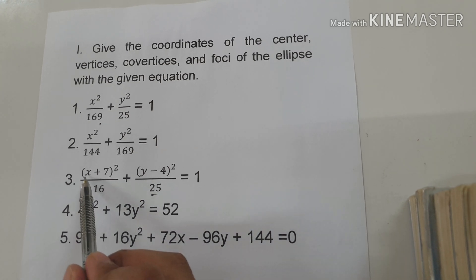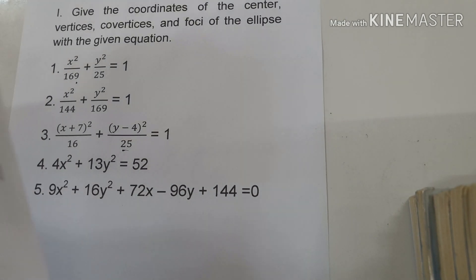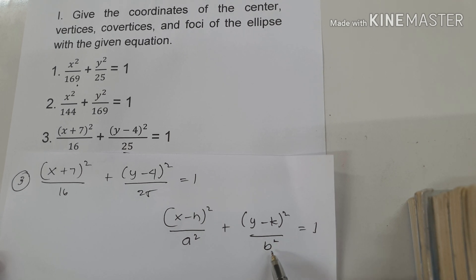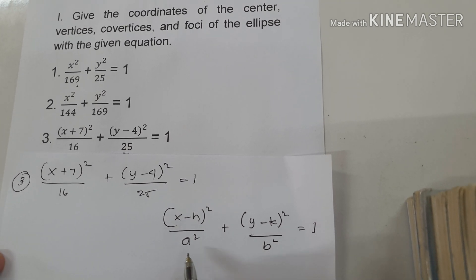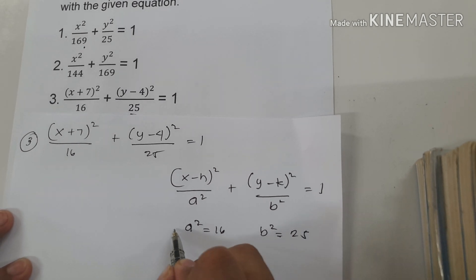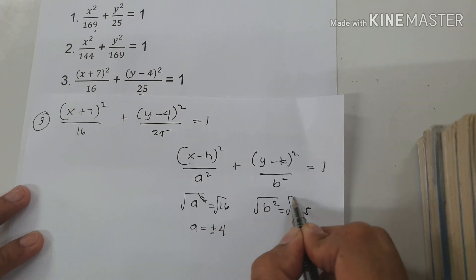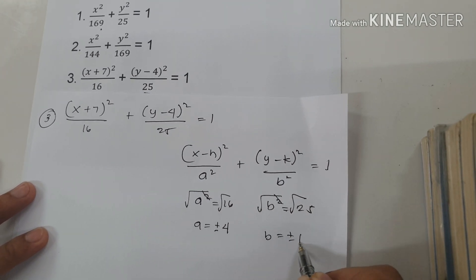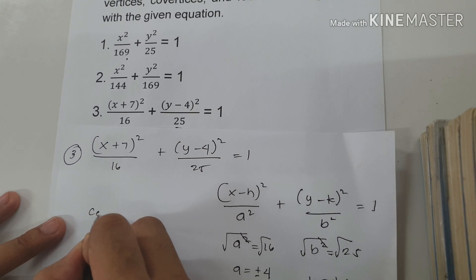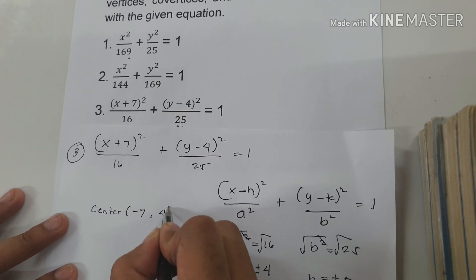On example number 3, we have (x plus 7) squared over 16 plus (y minus 4) squared over 25 equals 1. The equation is already in standard form. The value of a squared is 16, b squared is 25. So a is positive and negative 4, and b is positive and negative 5. Since we have a negative in our formula for x, the center becomes (negative 7, positive 4).